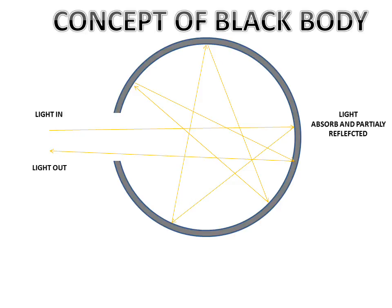So this is the concept of the black body - that light in will be very higher as compared to the light out. What does that mean? All the energy will be absorbed in this body and very small energy will be out from the body.